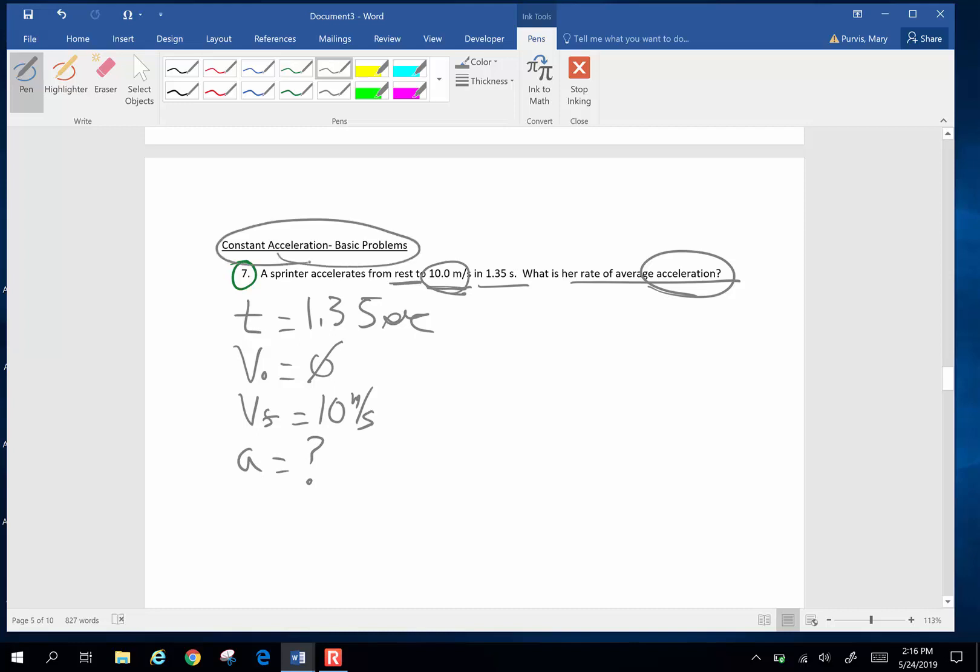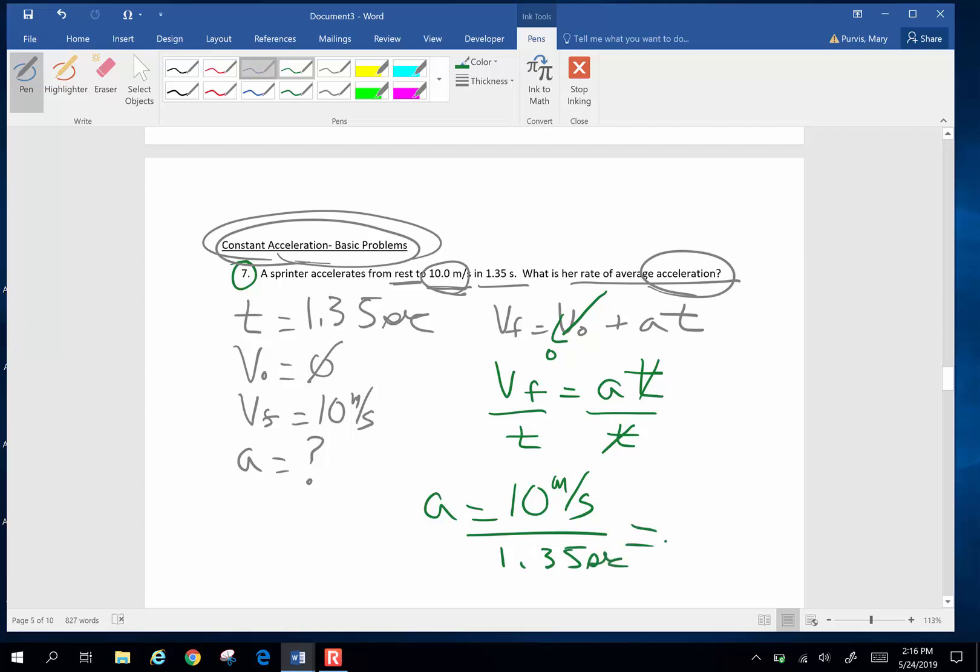Now we are now in the constant acceleration problem. So you have 4 big constant acceleration equations. Look for one of those. And the one I would choose is VF equals VO plus AT. Original velocity is 0. So this is going to go to 0. Final velocity then is going to be acceleration times time. To solve for acceleration, I'm going to divide both sides by T. And my acceleration is going to be my final velocity, 10 meters per second, divided by 1.35 seconds.